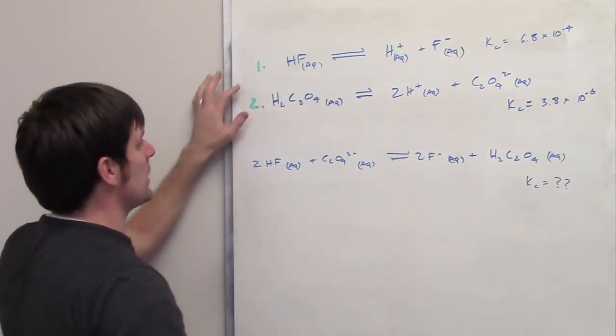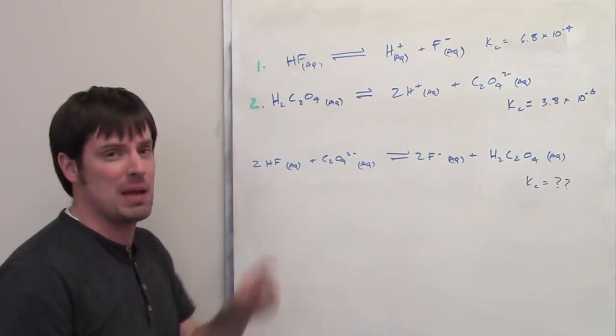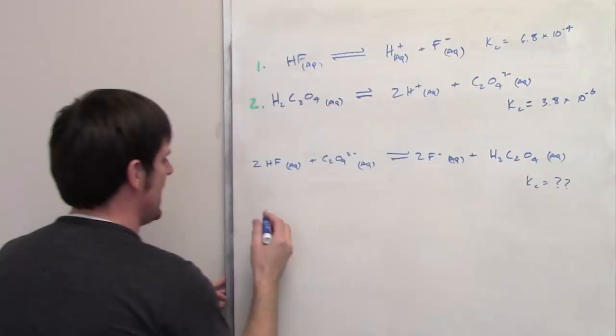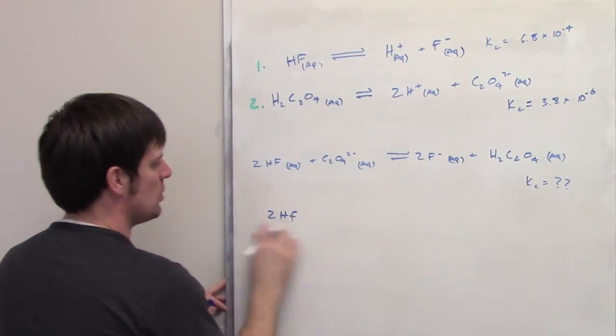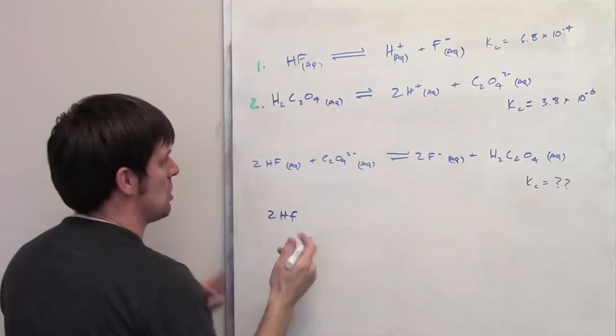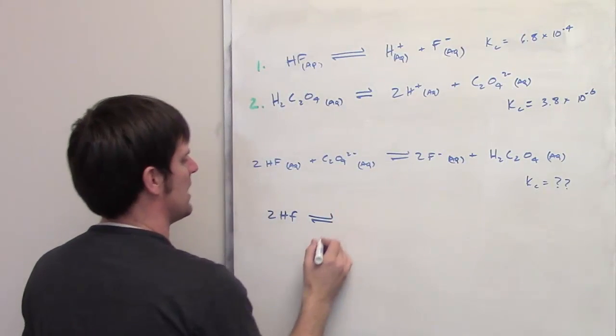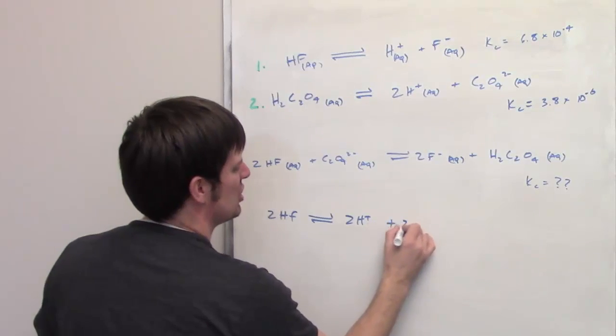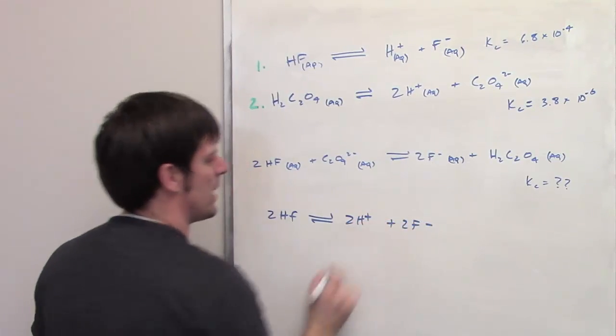What I can do is I'm going to take equation 1 and I'm going to multiply it by 2. I multiply every single term by 2. So that then gives this, or equation 1 becomes this. 2HF, and I'm going to leave out the AQ if you're okay with that just to save myself time and space, yields 2H pluses and 2F minuses, which is not a grade you want to get.